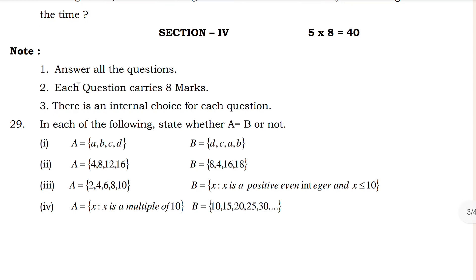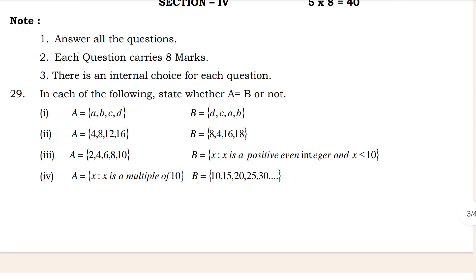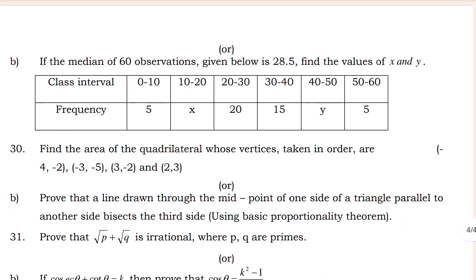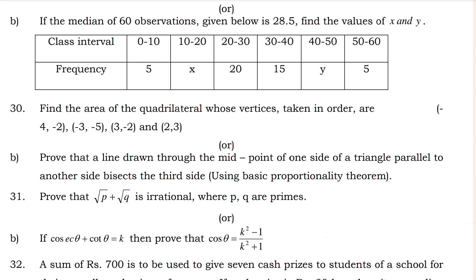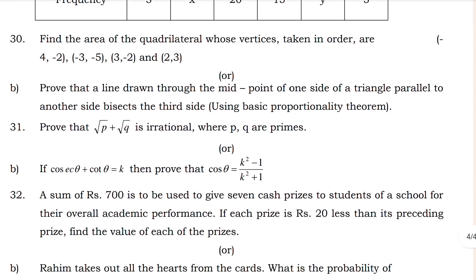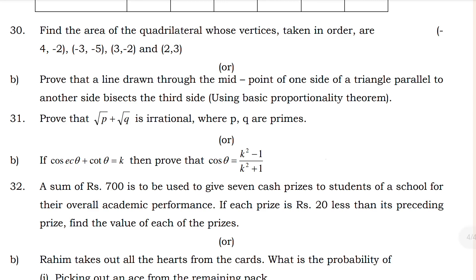There's a lot of chance Question 29 will come. Even if it's not coming in the exam, they will ask you in set-wise two marks questions. Question 30 is very important: If mean is 60, observation is up below 28.5, find the value of xy. This is a very important question, just mark and practice that one. Question 31 is very important: Prove that p plus q root a is an irrational. Both 31a and 31b are important.